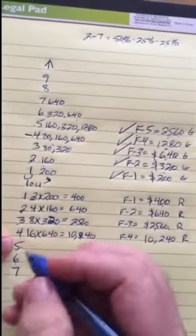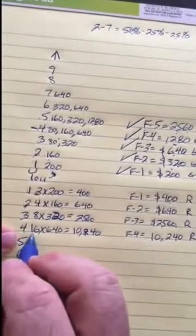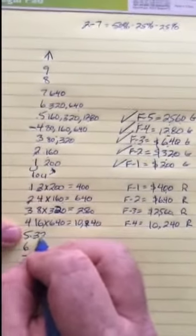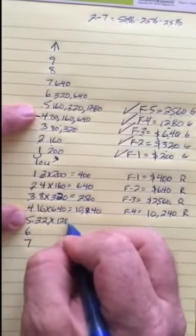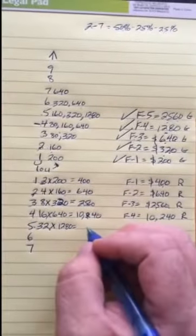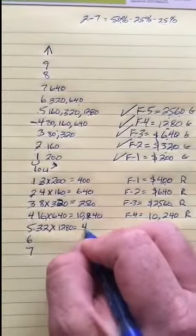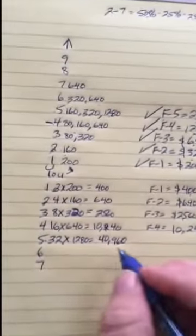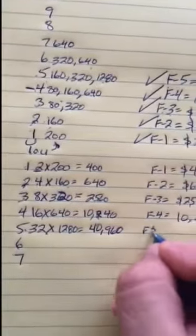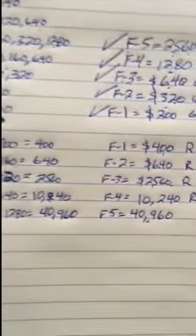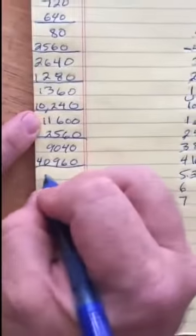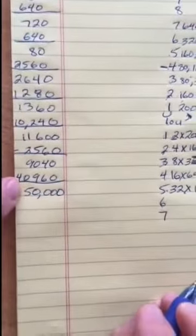Floor five is funded. Following two by two, you now have thirty-two people. Thirty-two times the target price of twelve eighty equals forty thousand nine hundred and sixty dollars received on floor five. Add that to your nine thousand forty and you get an even fifty thousand dollars flat in your project fund.